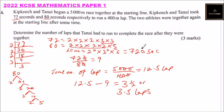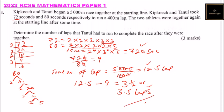So you get 1 mark for getting the lowest common multiple, another mark for calculating the total number of laps and getting 3.5 laps, and 1 mark for the final answer — that totals to 3 marks. So that's how you do that question.